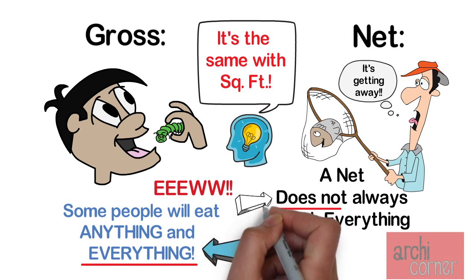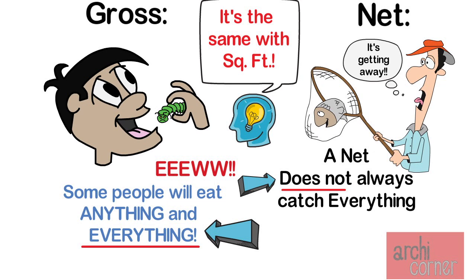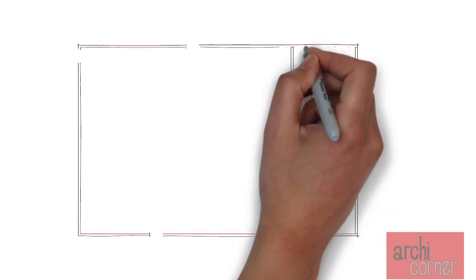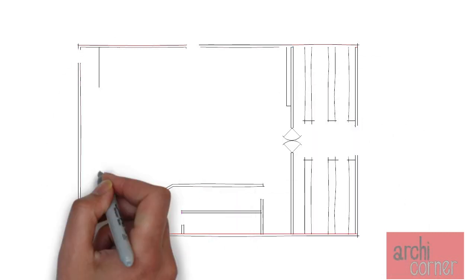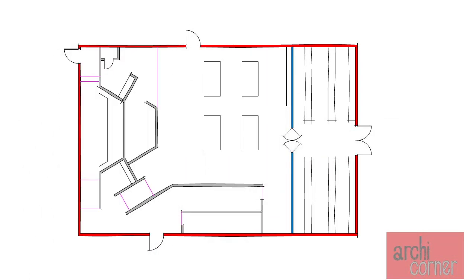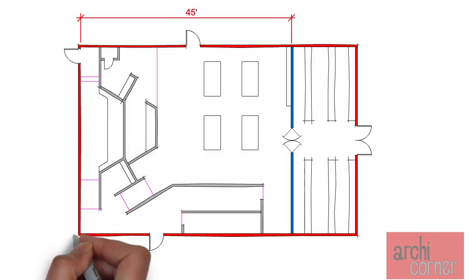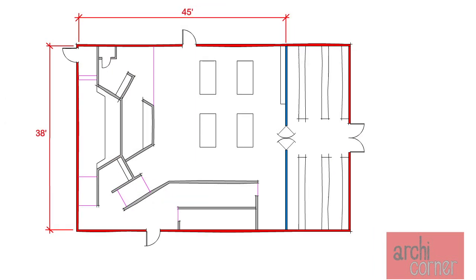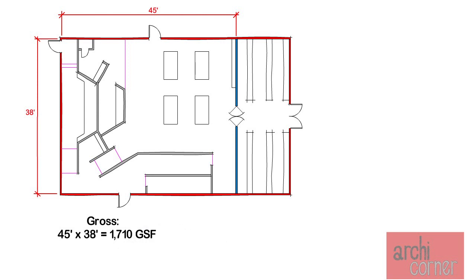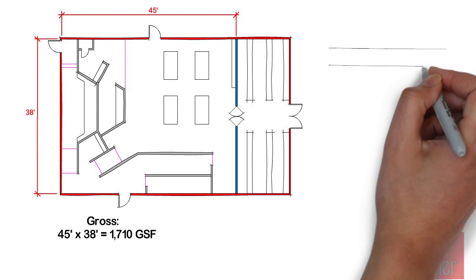Let us look at an example floor plan. Let us assume that we are tasked with figuring out the occupancy of the large area. To do this, the first thing we do is get the square footage. Looking at this plan, the measurements not including the thickness of the exterior walls are 45 feet by 38 feet. Therefore, the gross square footage is 1,710 gross square feet.